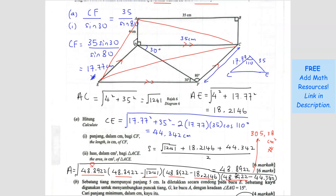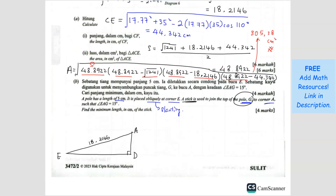We also know that AD is 4 cm because the height here is 4 cm. So the height is 4 cm. A pole is 5 cm. The pole is at corner E, but the pole is not going to be upright because they say it is placed obliquely. Obliquely means it is slanting — maybe slanting like this, or maybe slanting like this. We don't know how it's slanting.